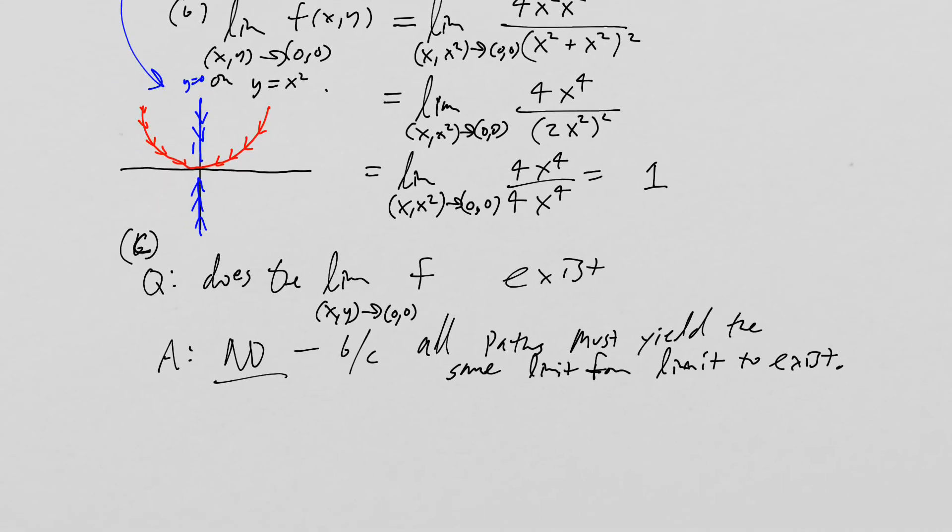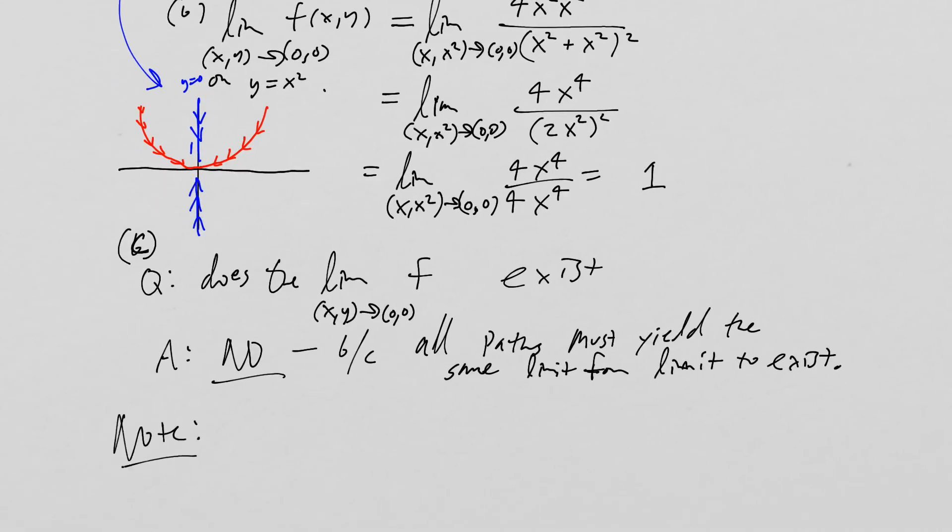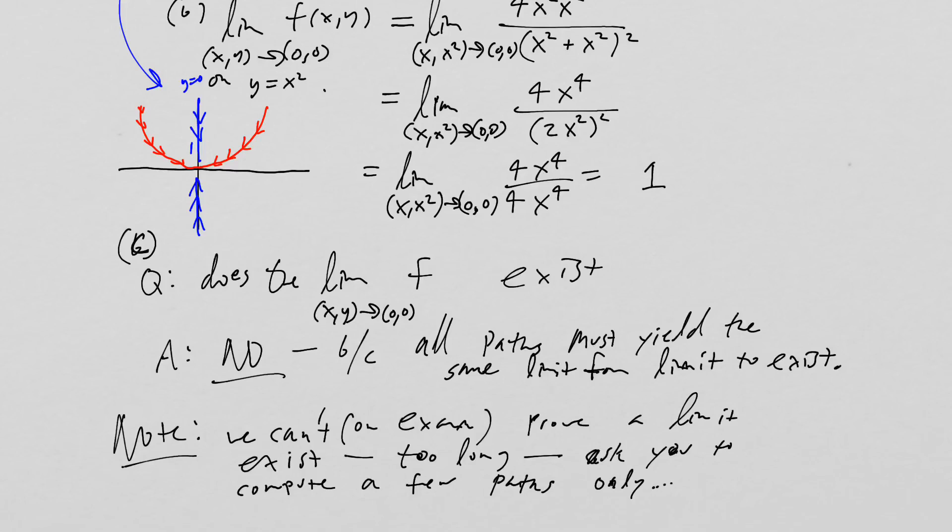It should be noted that we can't on the exam prove a limit exists. That takes too long to do. So what we're going to do is just ask you to compute a few paths only. So that's the main objective here is just to show that you know how to compute limits on multiple paths. And that's it.